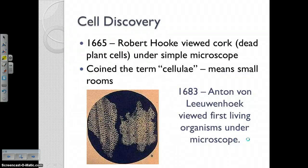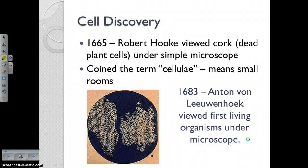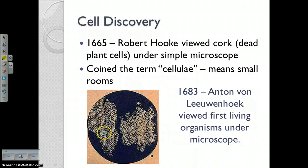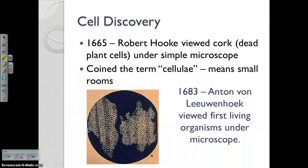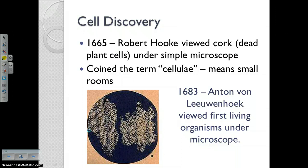So how do we know what we know today about cells? Well, it really started with a guy named Robert Hooke in 1665. He was the first one to build a simple microscope and view a piece of cork underneath the microscope, which is actually dead plant cells. This is actually his illustration from his notebook here. When he looked at the cork, it looked like little small rooms, so he gave them the term "celluli," which actually means small rooms. He thought they looked like the small rooms that monks lived in at the time. So he was really the first person to coin the term "cell" that we use today.